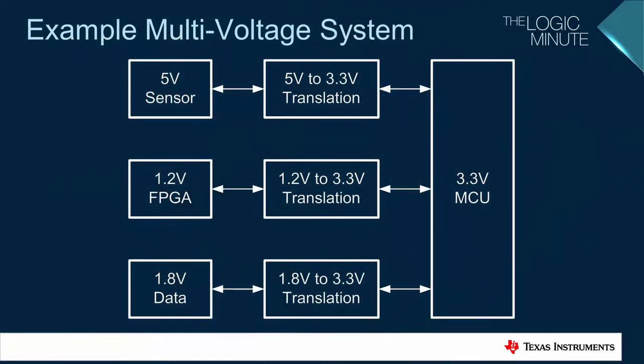For this video, we have created an example system that needs three different data translation paths. The core processor for this system is a 3.3 volt microcontroller. It needs to communicate with a sensor, an FPGA, and a generic 1.8 volt device. There are three up translation paths, shown here with red arrows.